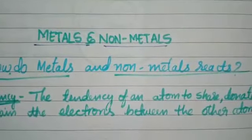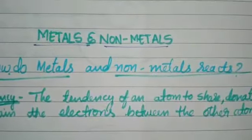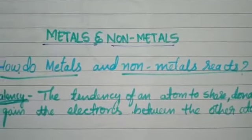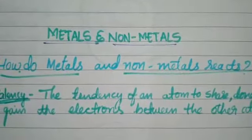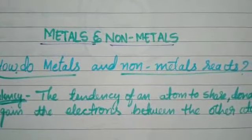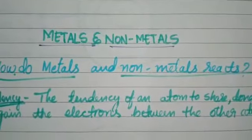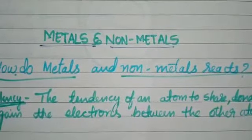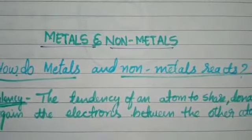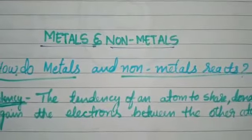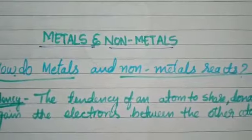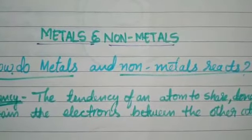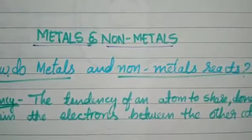Every atom tries to gain eight electrons in its outermost shell. Every element has a tendency to attain a completely filled valence shell — it tries to achieve that stable configuration.